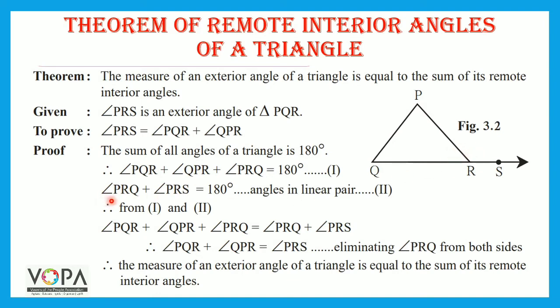From this, angle PRQ plus angle PRS is equal to 180 degrees. Reason: angles in a linear pair. This is statement number 2.